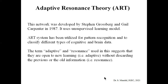Now the name — why do we use the terms Adaptive and Resonance? The term Adaptive suggests that the network is open to new learning. This is the significance of the term Adaptive. And during the learning, it should not discard the previous learning or the old information. That is the significance of the term Resonance.